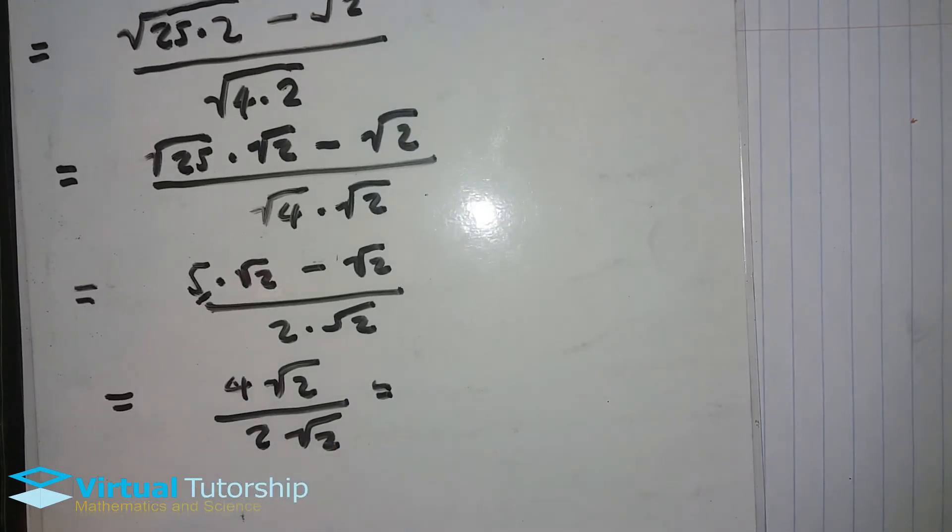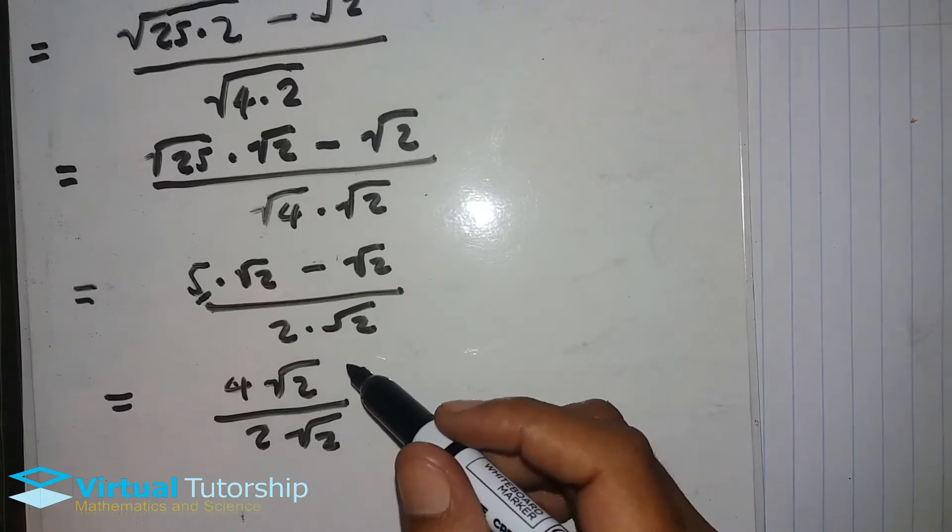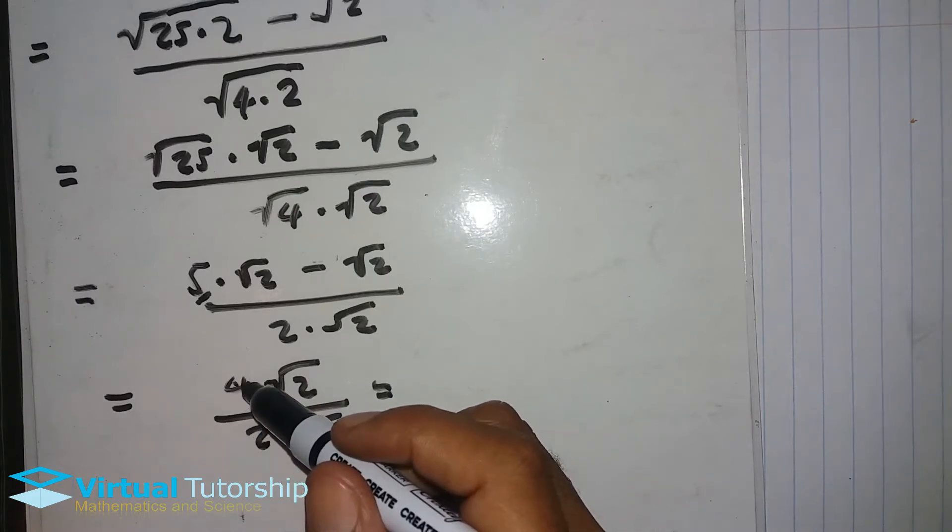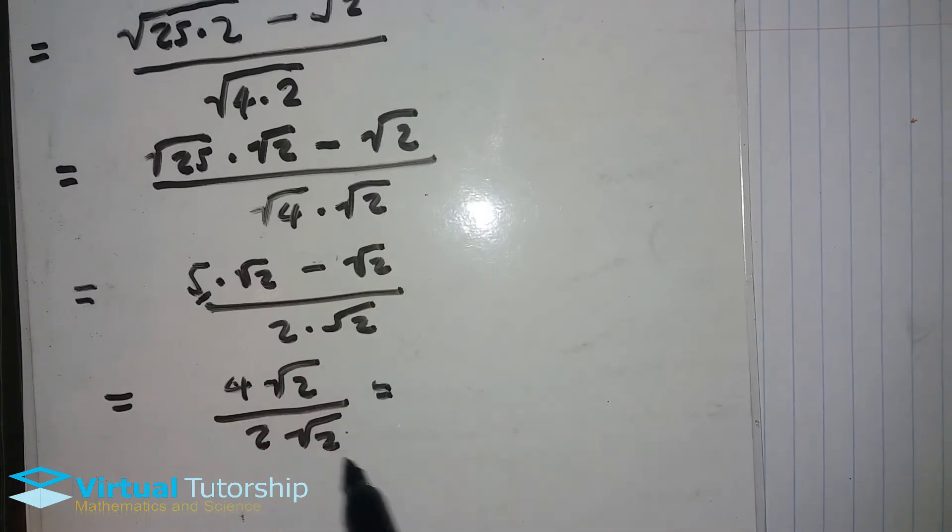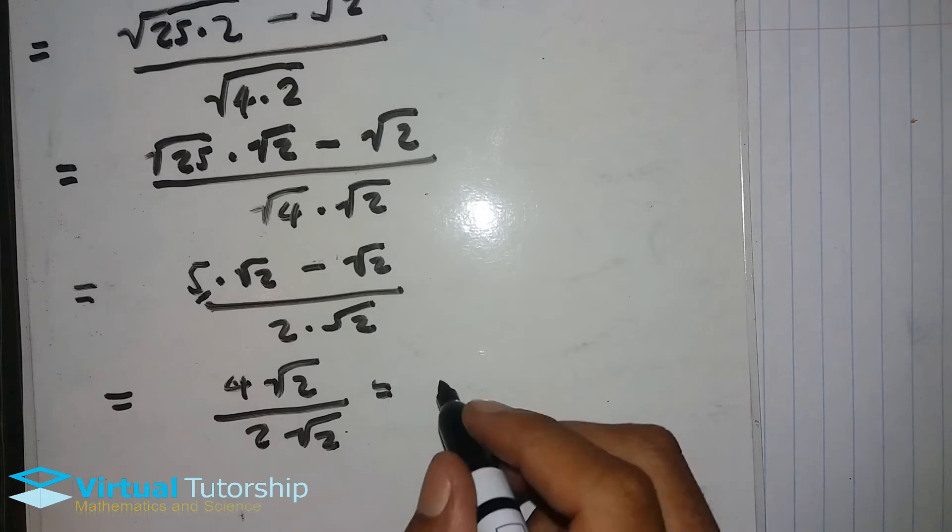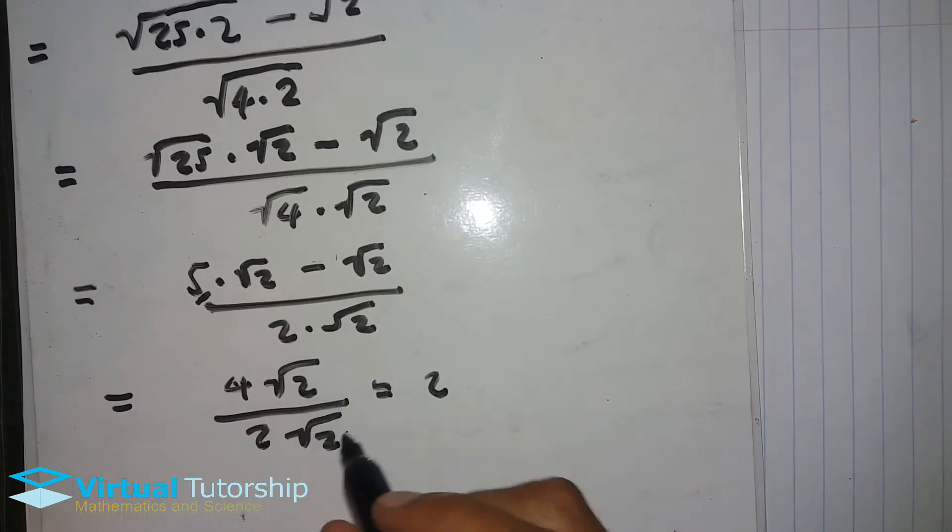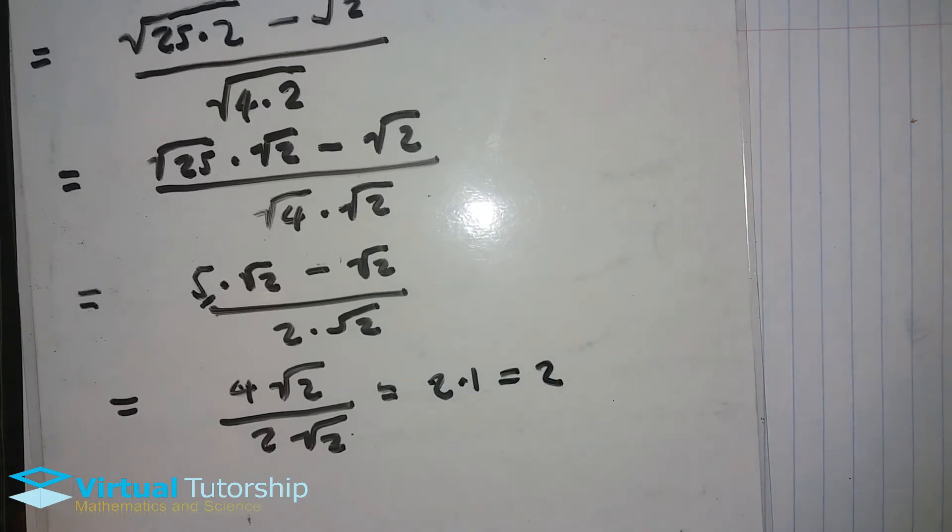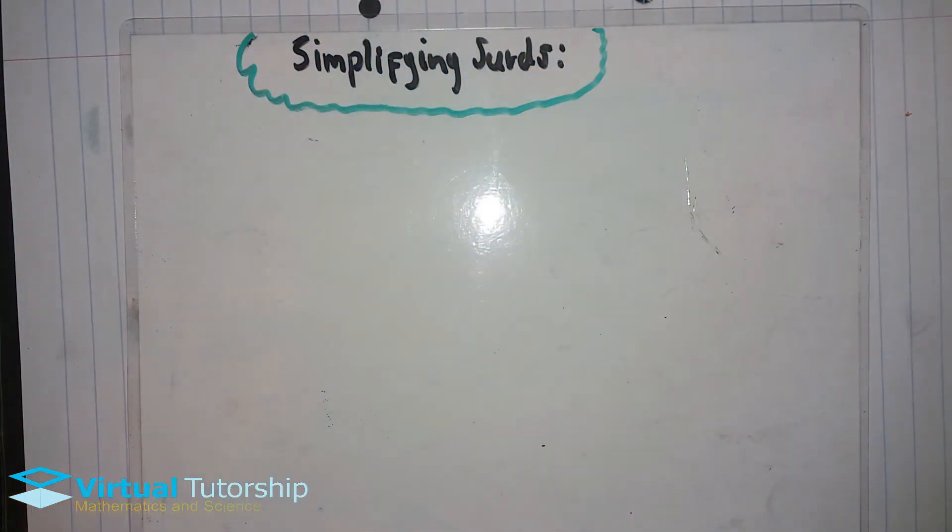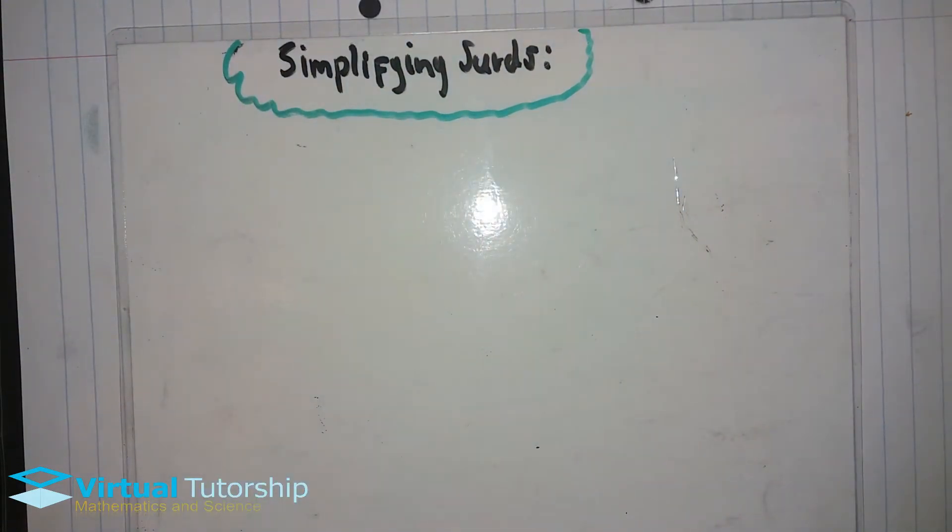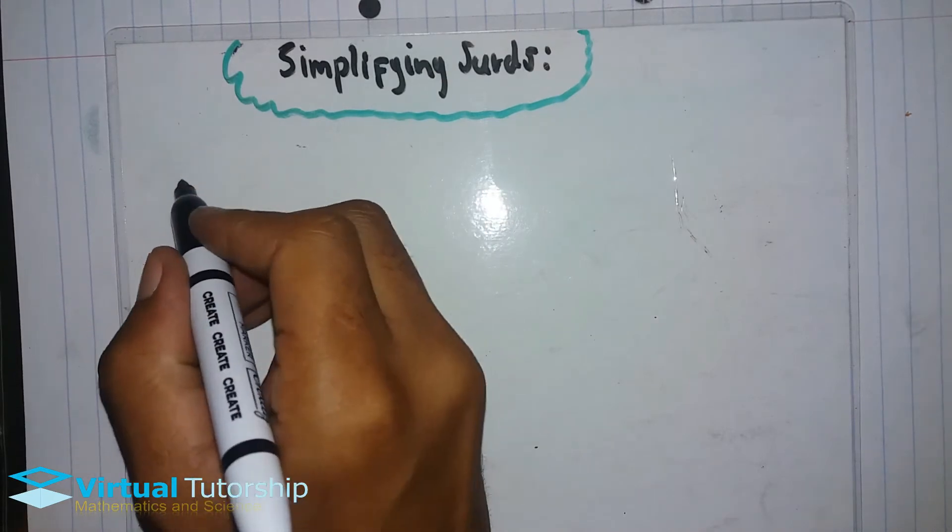So on the numerator, 5 square root 2 minus square root 2, that's 5 minus 1, which is 4 square root 2 over 2 square root 2. 4 divided by 2 is 2, square root 2 divided by square root 2 is 1. So it's 2.